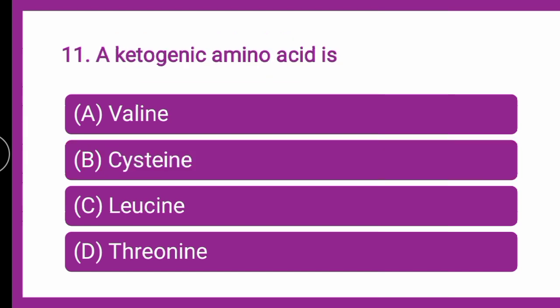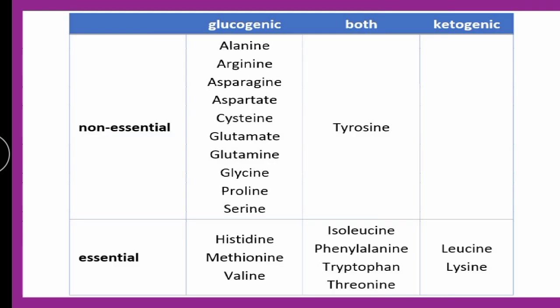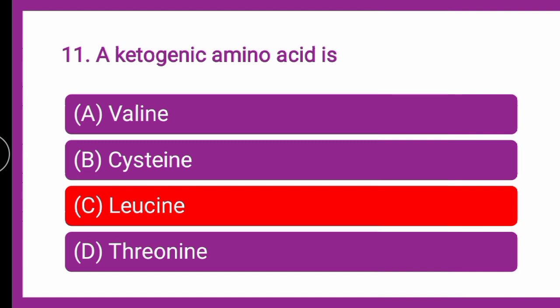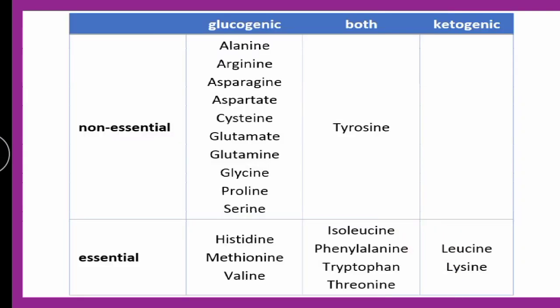Next question: a ketogenic amino acid is — whether it is valine, cysteine, leucine, or threonine. There are glucogenic and ketogenic forms of amino acids. The ketogenic amino acids are leucine and lysine, as they are dependent on functional groups like keto and glucoaldehyde. So the correct answer is leucine.